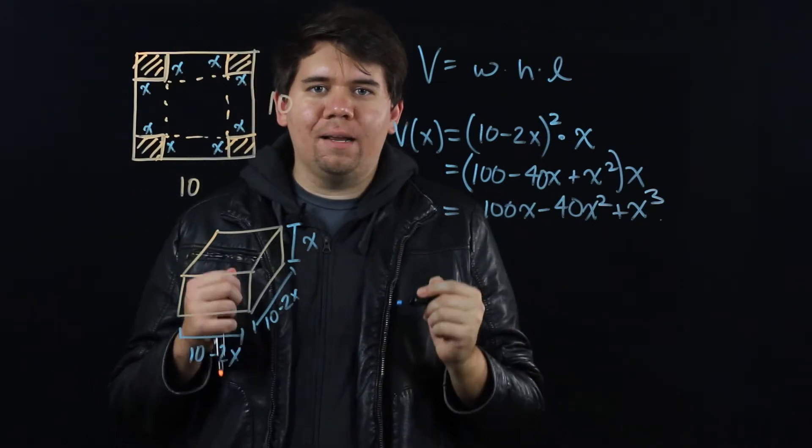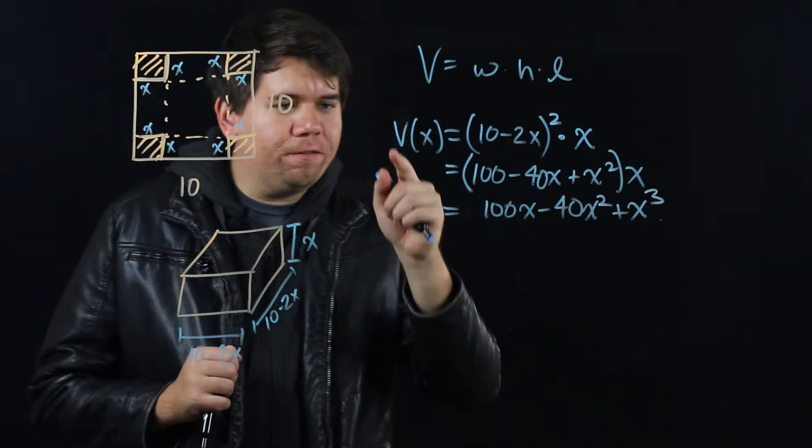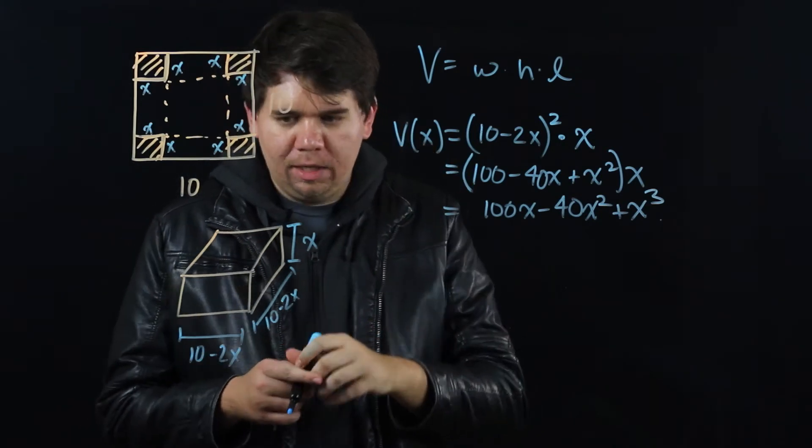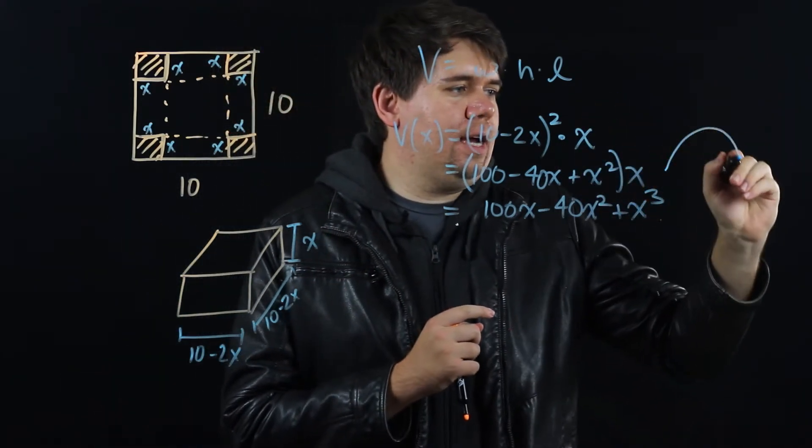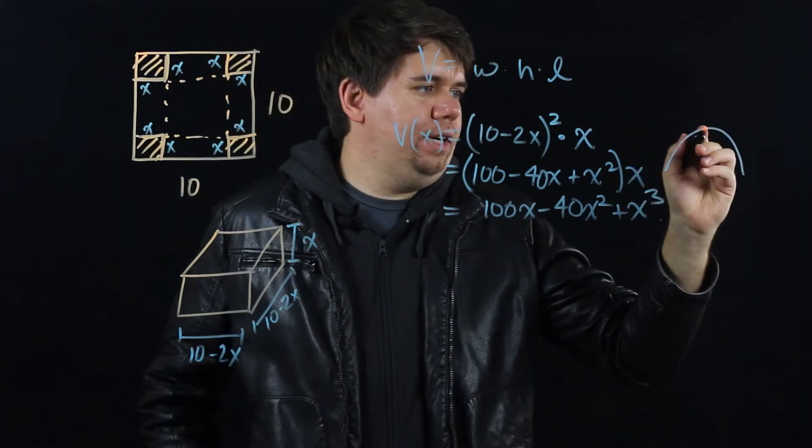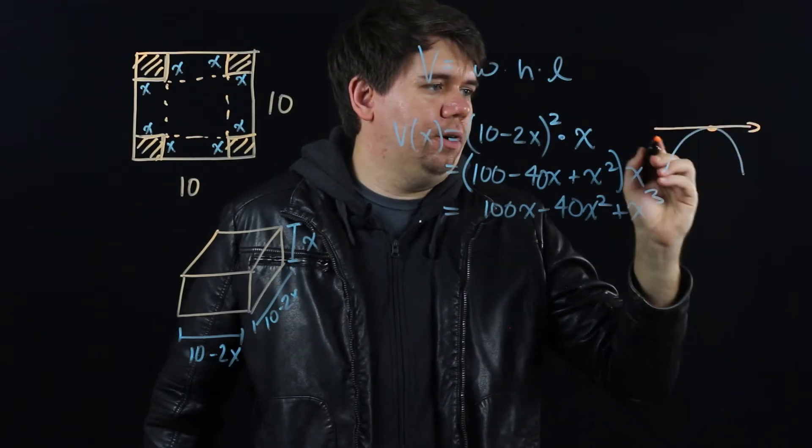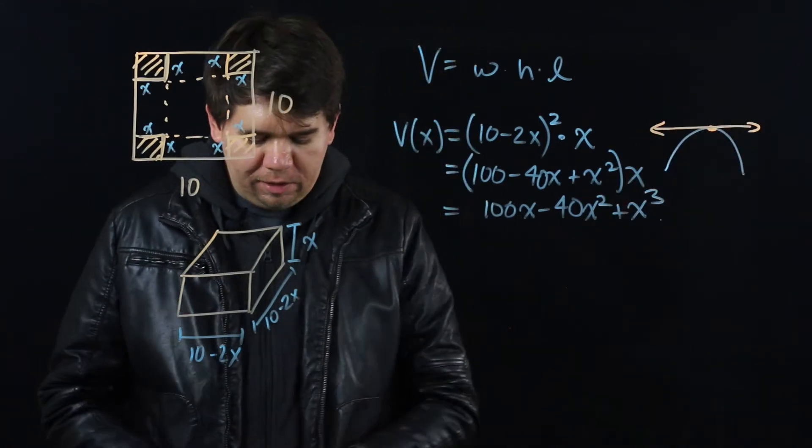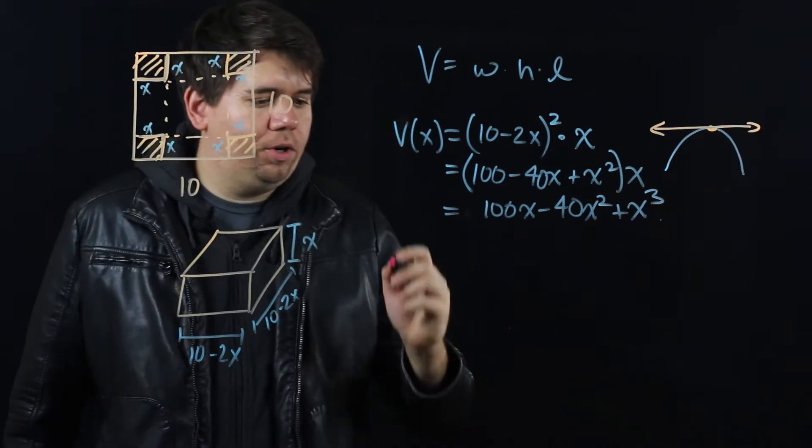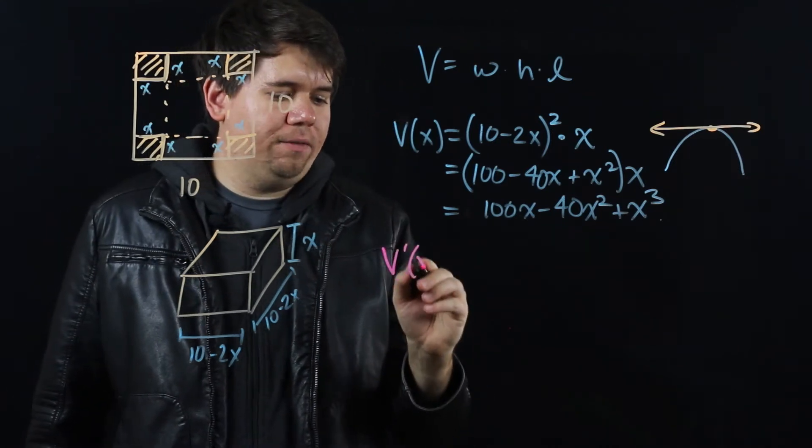Now, when will this be at a maximum? We know a function achieves its maximum - a function will peak at its maximum when its derivative is 0. So what we're going to do is we're going to solve for the derivative of this function. We're going to find v prime of x.